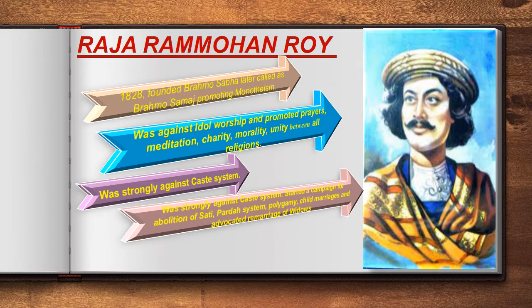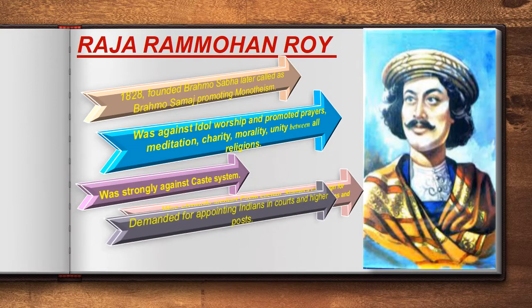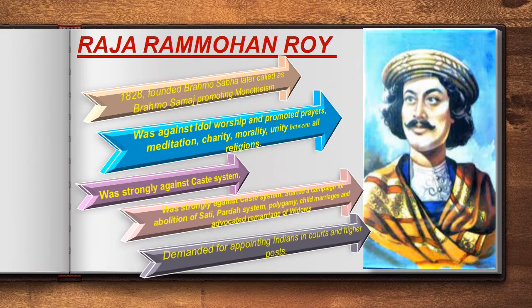Because of Raja Ram Mohan Roy, William Bentinck made sati illegal and punishable by law in 1829. He also promoted freedom of the press and demanded the appointment of Indians in courts and higher posts.